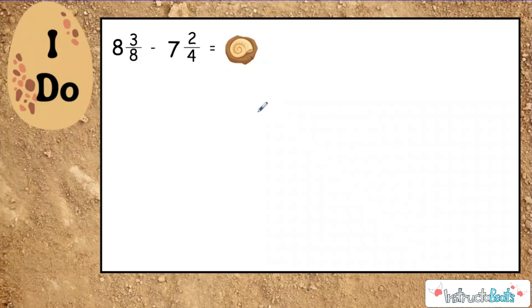So here we have eight and three-eighths minus seven and two-fourths, and we want to see what fossil, what dinosaur was this fossil a part of. And so the first rule of thumb is I can't subtract these fractions because the denominators aren't the same. I need to find an equivalent fraction for two-fourths that has a common denominator, and I'm going to use my equivalent fraction skills to say that two-fourths is the same as four-eighths.